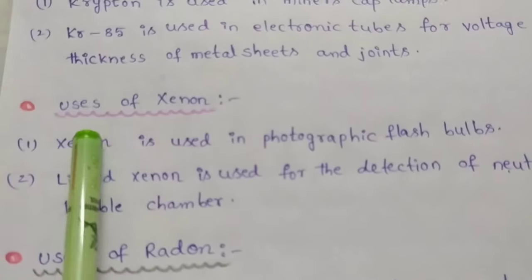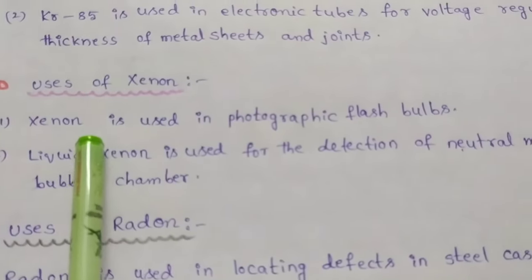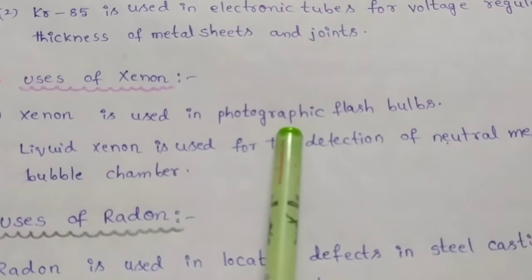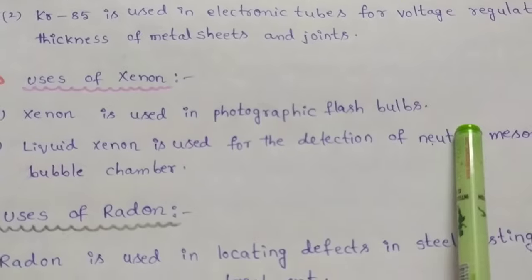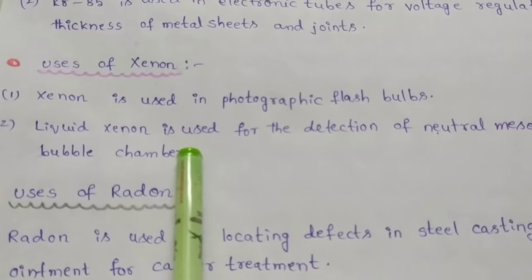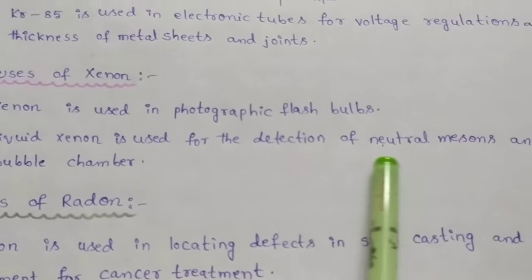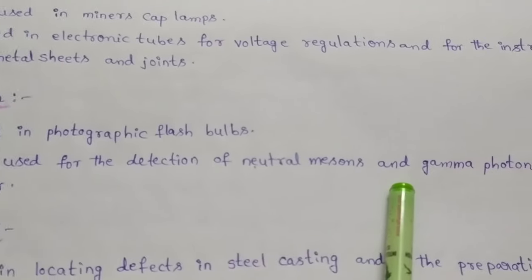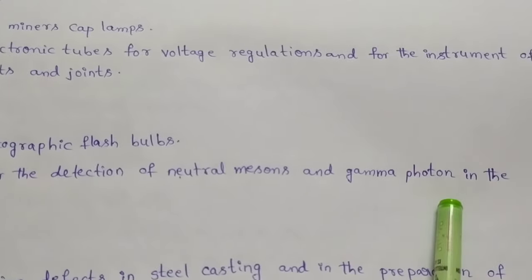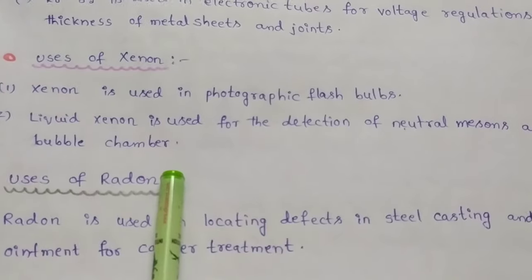Now we discuss the uses of xenon. Xenon is used in photographic flashbulbs. Liquid xenon is used for the detection of neutral mesons and gamma particles in the bubble chamber.